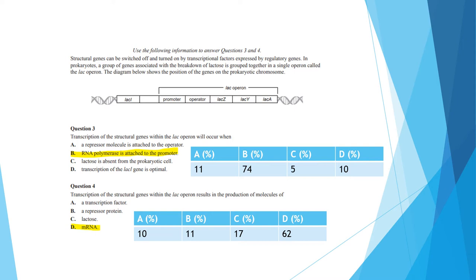For question 4, transcription of the structural genes within the lac operon results in the production of molecules of mRNA. Once again, the majority of students got it right, but the percentage here is lower. The question is in essence asking you what transcription of a gene produces, which is mRNA. Lactose is the target of this lac operon to break down. Transcription factor is a protein that regulates the rate of transcription. A repressor protein is a protein that inhibits the expression of a gene, so neither of them would be correct.